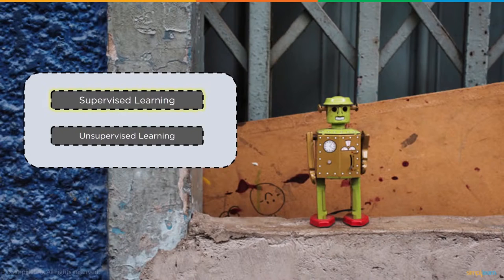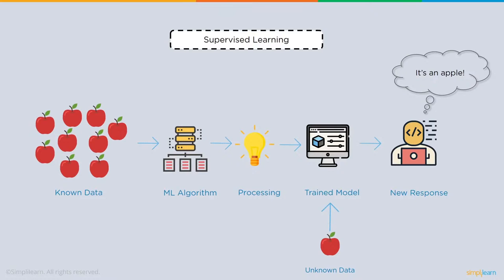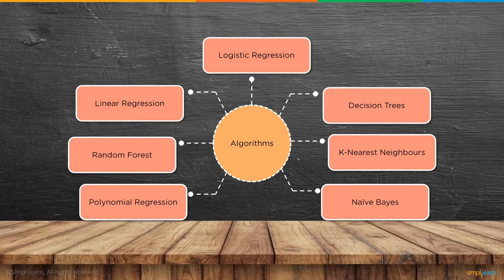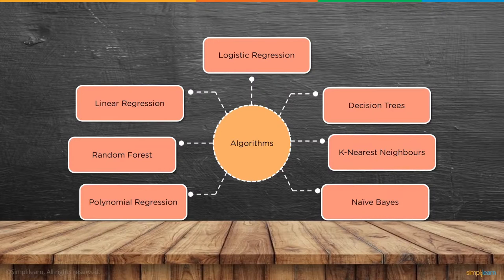The two main types of machine learning are supervised and unsupervised learning. In supervised learning, we have known data — for example, apples — we train a model on that known data, then feed unknown data and get a new response. Algorithms used include polynomial regression, random forest, linear regression, logistic regression, decision trees, K-Nearest Neighbors, and Naive Bayes.